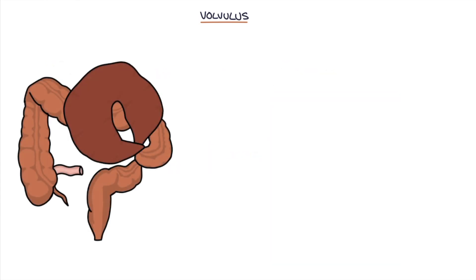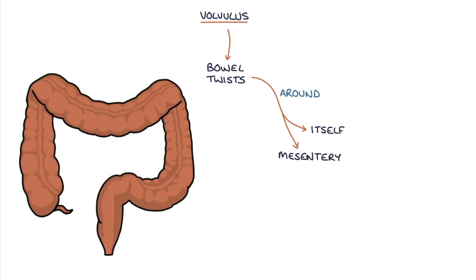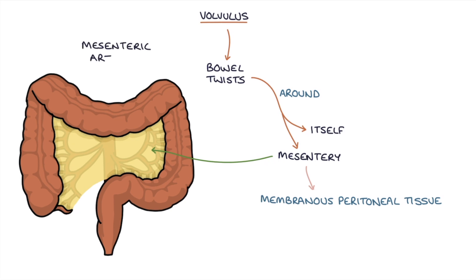Volvulus is a condition where the bowel twists around itself and the mesentery that it's attached to. The mesentery is the membranous peritoneal tissue that creates a connection between the bowel and the posterior abdominal wall. The bowel gets its blood supply from the mesentery through the mesenteric arteries.